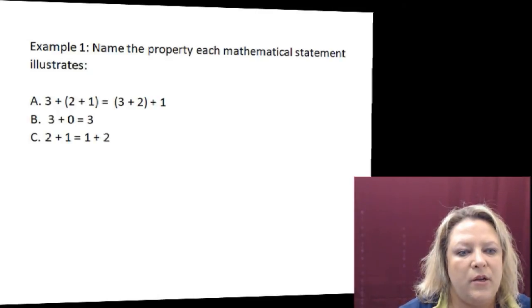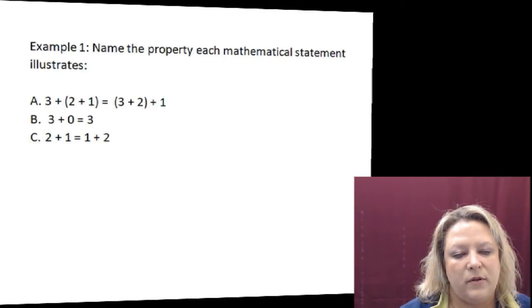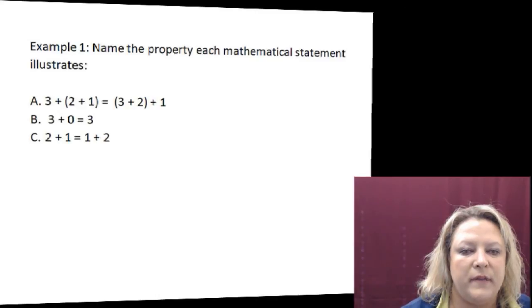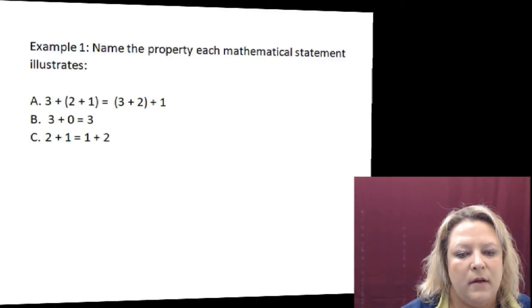In choice B, you have 3 plus 0 equals 3. That means that we did not change the value of the 3 that we started with. That is our property of 0. And the last one, 2 plus 1, is equal to 1 plus 2. That is commutative property because all we did was flip the numbers around.